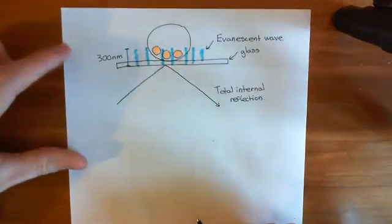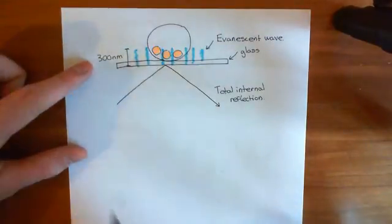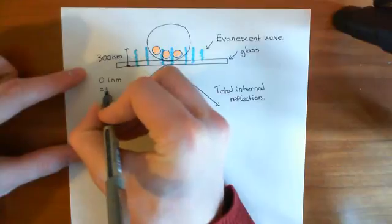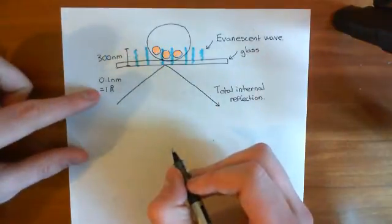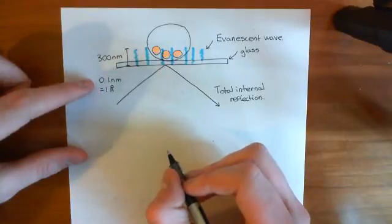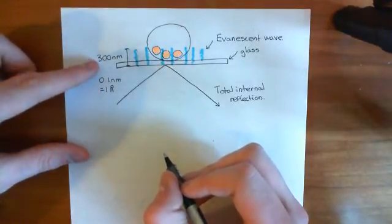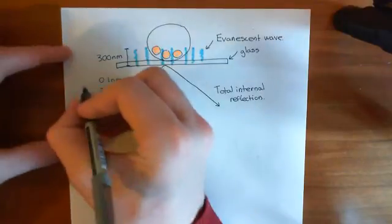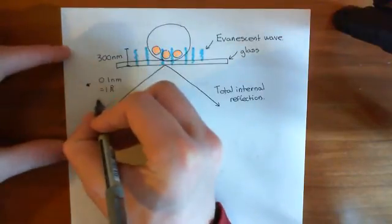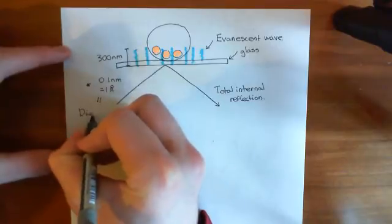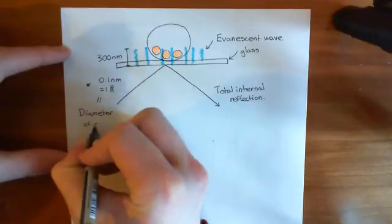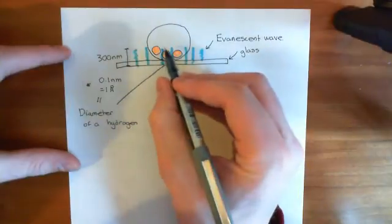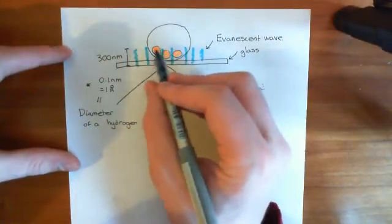To put 300 nanometres in scale: 0.1 nanometres, or 1 ångström, is the diameter of a hydrogen atom. So 300 nanometres is about 3,000 times the diameter of a hydrogen atom — not that much when you think about it. But the point is that you do get this energy spreading into this first little layer of the cell.